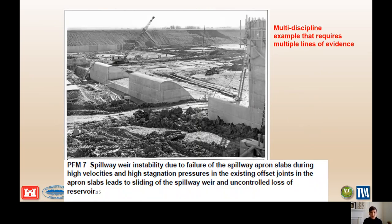Building the case for probability of failure given loading — here is an example: PFM 7 is spillway weir instability due to failure of the spillway apron slabs during high velocities and high stagnation pressures in existing offsets in the joints of the apron slabs, leading to sliding of the spillway pier. In other words, this is a failure of the apron slabs leading to erosion that causes a sliding instability of the OG section.